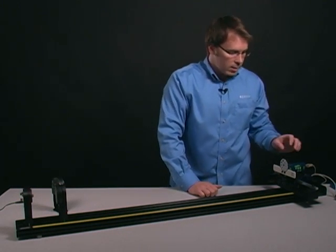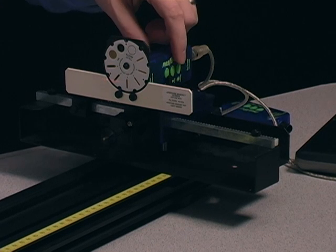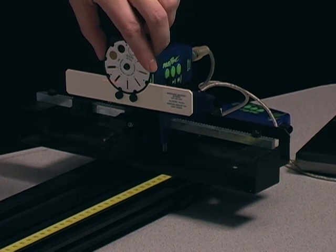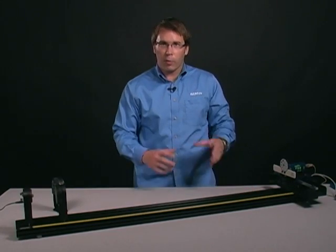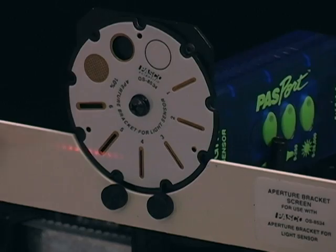The aperture bracket is attached to the light sensor. The light sensor is set to a sensitivity of medium range, and the aperture bracket is set to slit number four. Slit number four allows enough light to get in so I can see my results in Data Studio, but also minimizes the spacing in between the interference patterns so I can easily differentiate between one maxima to the next.